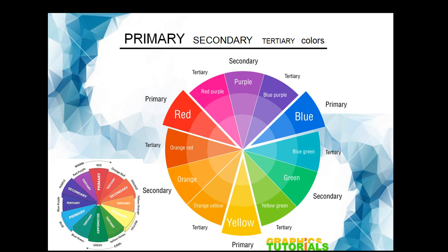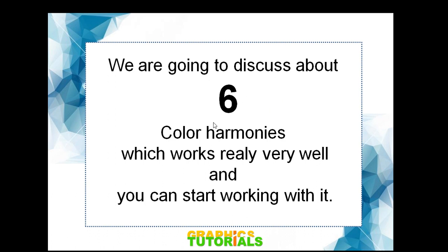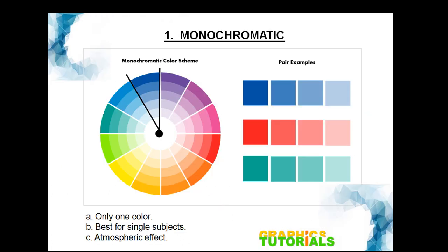Today we are going to discuss about six color harmonies that work really well. Our first color harmony is monochromatic. Monochromatic means one single color scheme — say for example this blue. You can use any of the shades that belong to this blue, or take this red. As you go toward the center it gets lighter, so you can use the gradation or tint of the color. The specialty of monochromatic is only one color, best used for a single subject, and it helps to create an atmospheric effect.